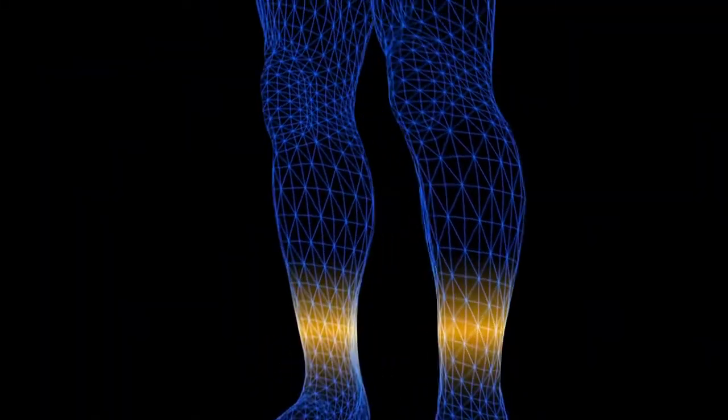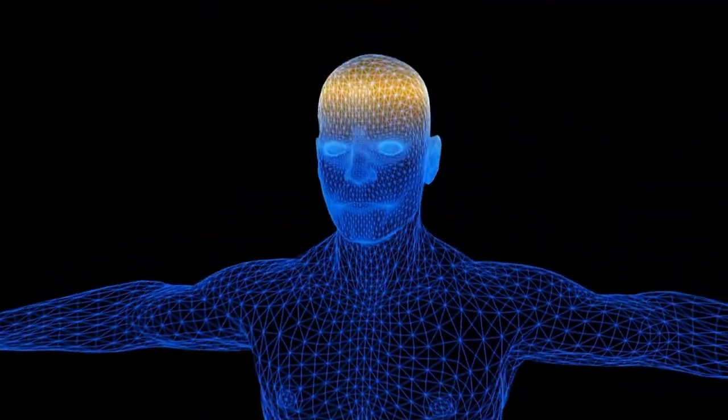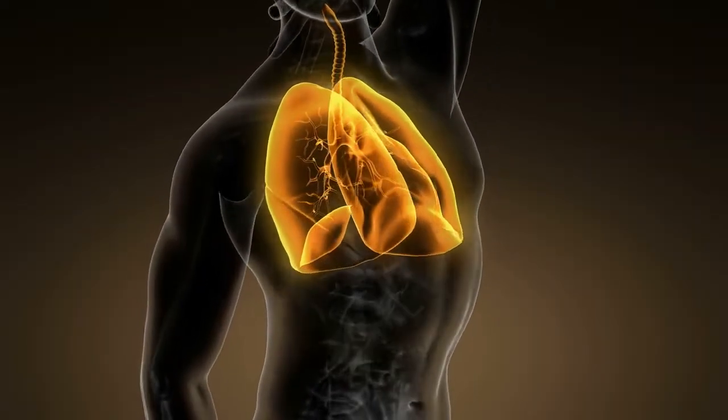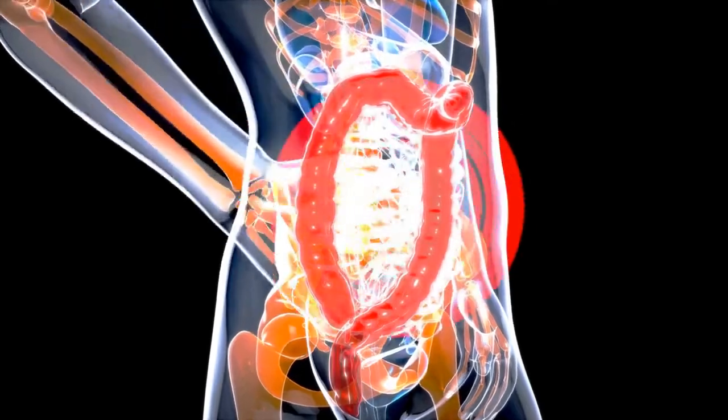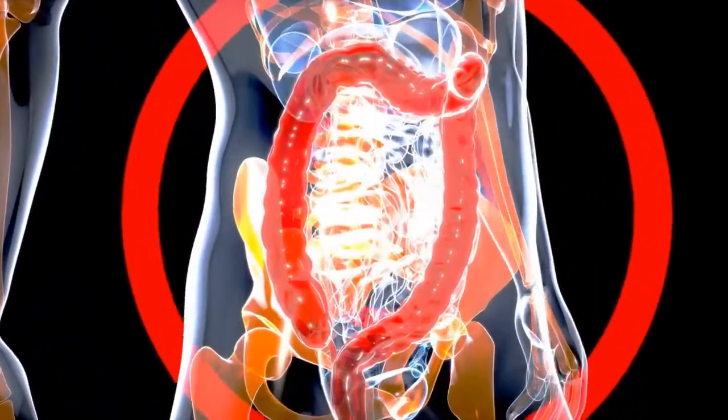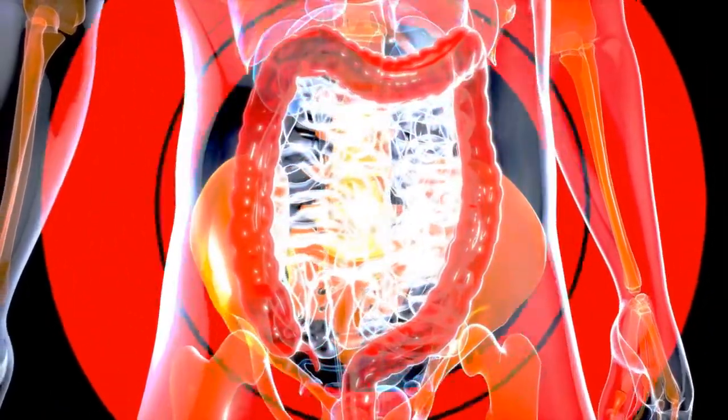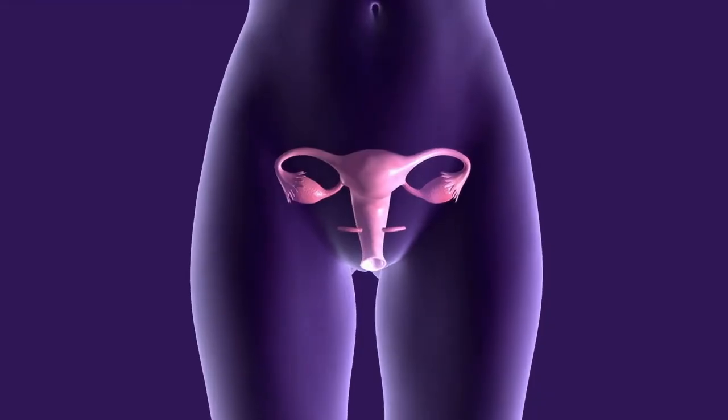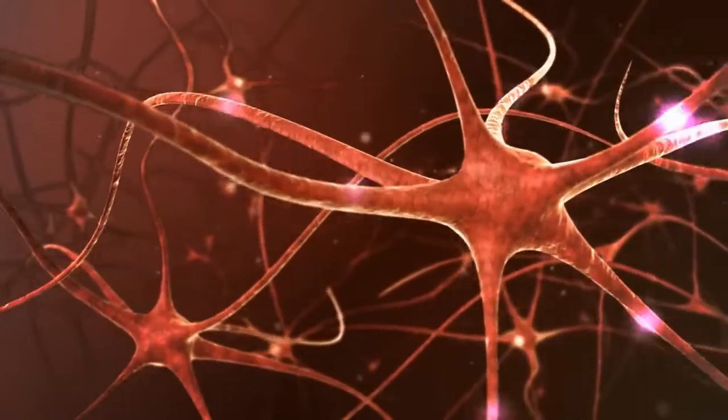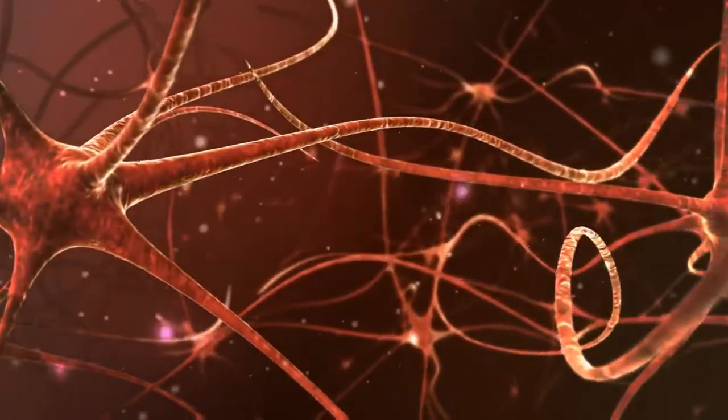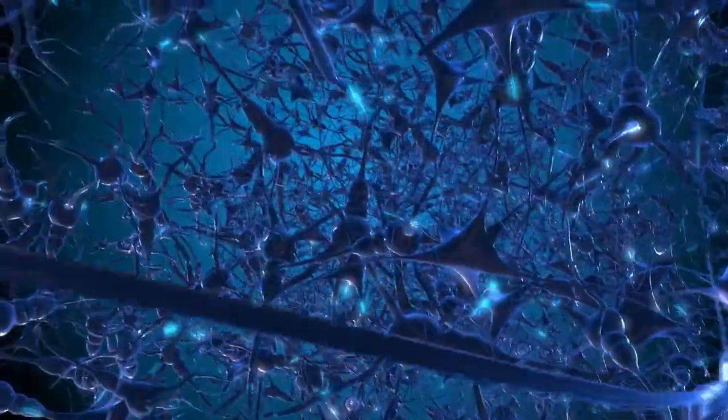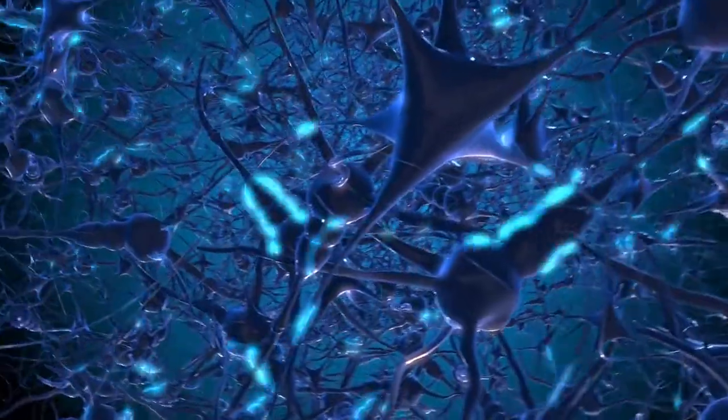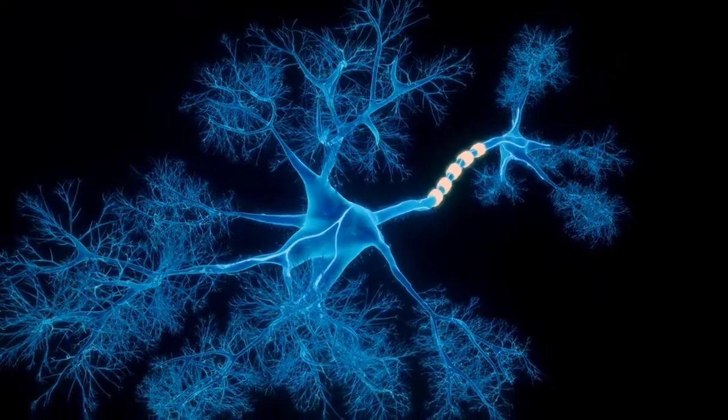Cells are responsible for carrying out all the functions of the body, including respiration, digestion, and reproduction. They are constantly communicating with each other, sending signals, and carrying out instructions to keep our body functioning properly.